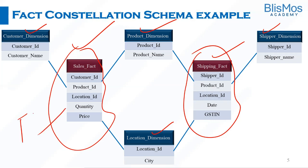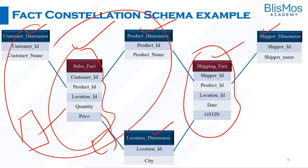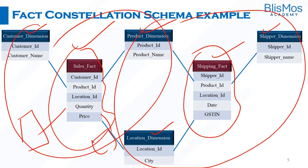Here you have multiple fact tables and multiple dimension tables, so each grouping can itself represent one star schema. The product dimension table is shared — connected to both the sales fact table and the shipping fact table. That's fact constellation schema at a high level. Thank you.